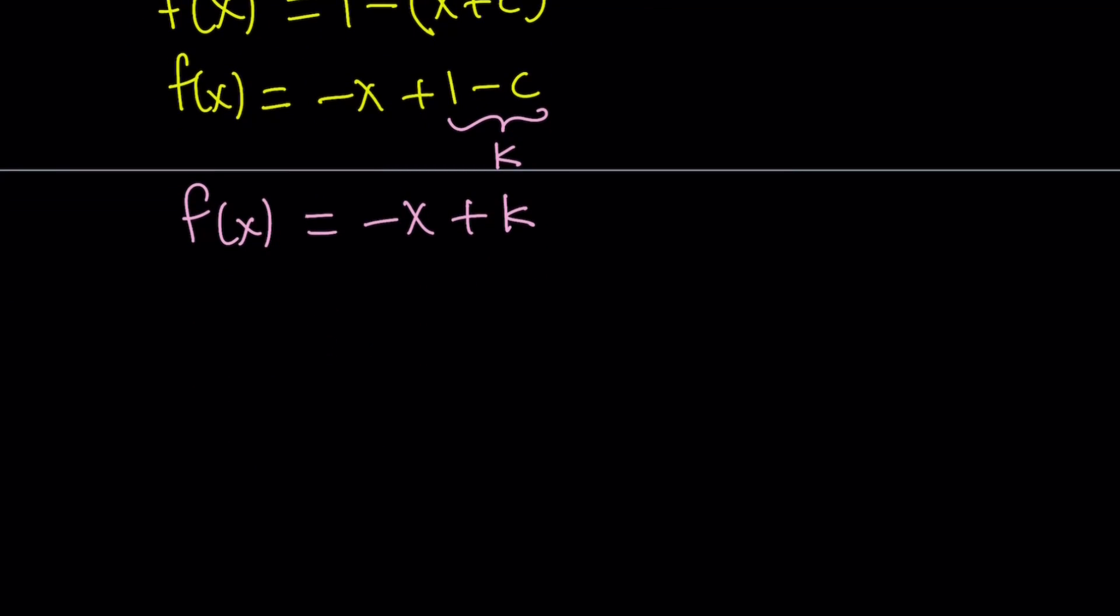So we kind of got an expression for f, right? We can go ahead and substitute this expression into the original equation to find the value of k. In some cases you don't find a value of k, it just stays as an arbitrary constant. Now our original equation was f(x - f(y)) = 1 - x - y, remember?